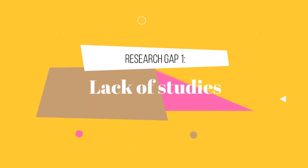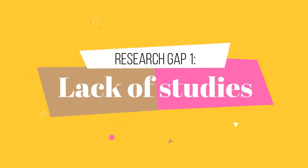Before I explain how to actually find a research gap, let's talk about what a research gap is. There are really three main types of a research gap. The first type is a lack of studies or insufficient studies. Within this type there are also several subtypes — for example, there can be insufficient studies in a particular geographical area.